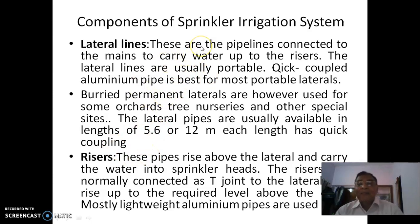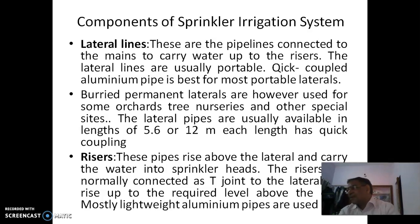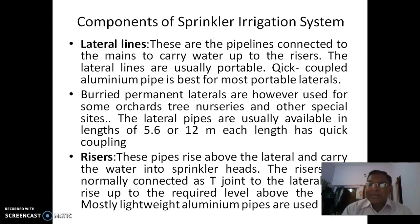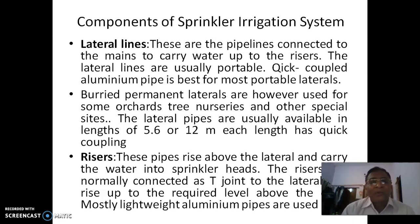Lateral lines are pipelines connected to the mains to carry water up to the risers. They are usually portable and quick-coupled. Aluminum pipe is best for most portable laterals. These laterals are often movable — only the main pipeline, if permanently laid, remains fixed, but laterals many times need to be removed and repositioned. It is always better to keep them movable, so aluminum pipes are preferred.